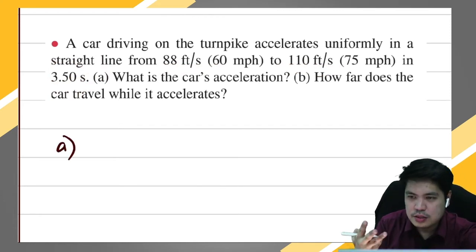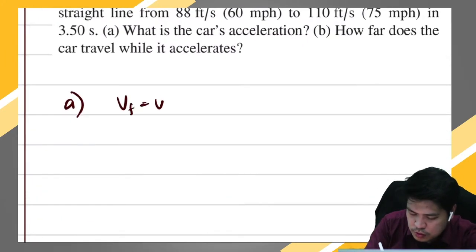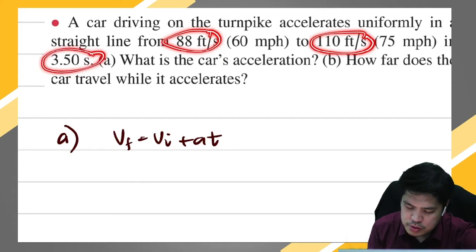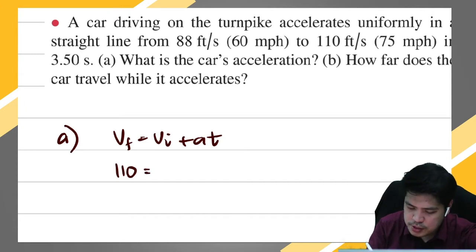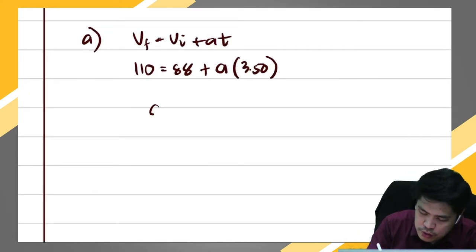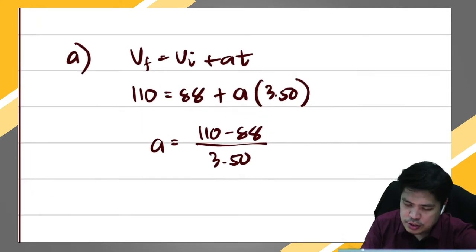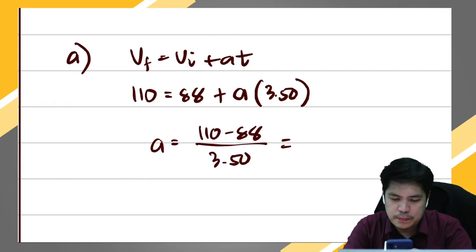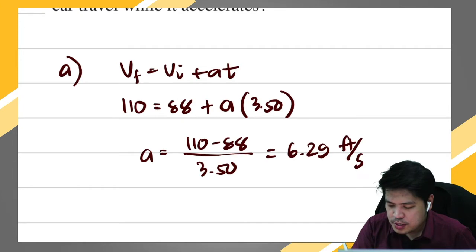To answer letter a, since we have three formulas, let's use the formula: vf = vi + at. We have the initial velocity, the final velocity, and the time, so we can solve for the acceleration. Final velocity is 110, equal to initial velocity 88 plus acceleration times 3.50 seconds. Solving for a: a = (110 − 88) / 3.50, which is just the definition of acceleration — change in velocity over time — giving us 6.29.